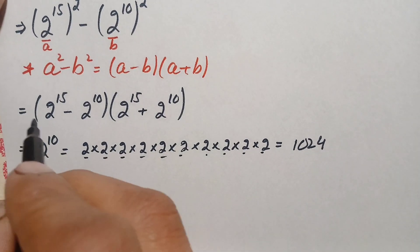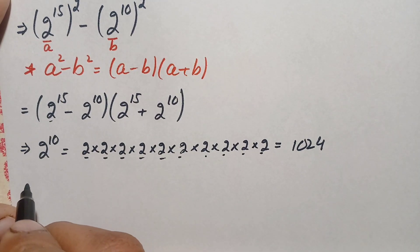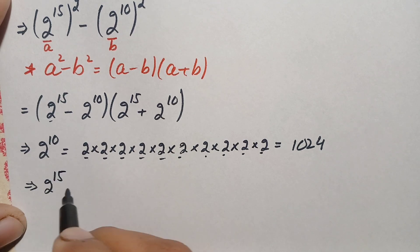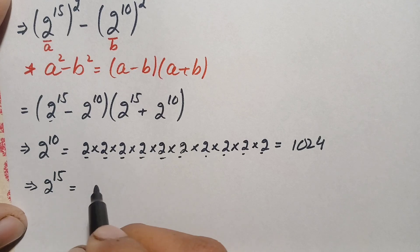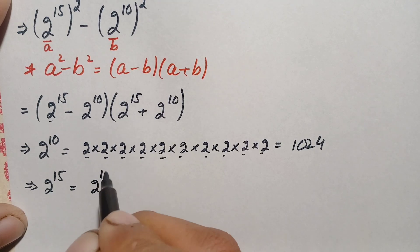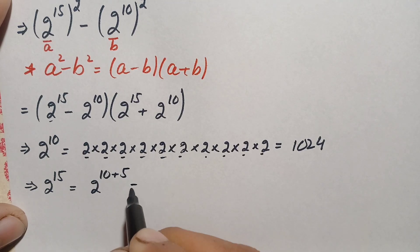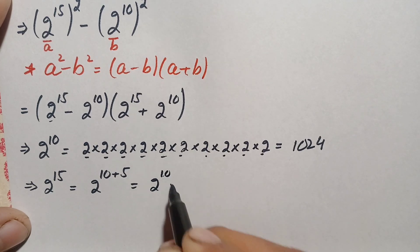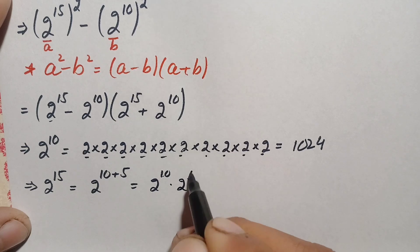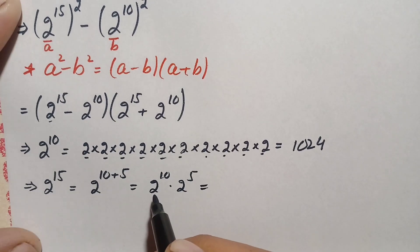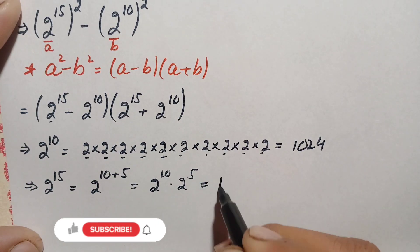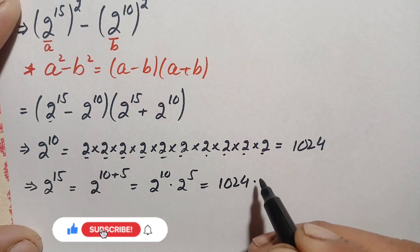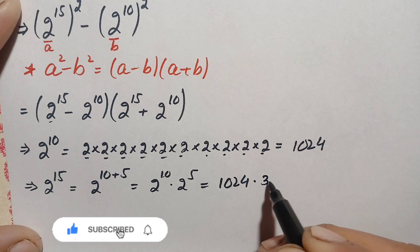Next we find 2 raised to power 15. We write 15 as 10 plus 5, so 2 raised to power 15 equals 2 raised to power 10 times 2 raised to power 5. We have 2 raised to power 10 equals 1024, and 2 raised to power 5 is simply 32. So we multiply 1024 times 32.